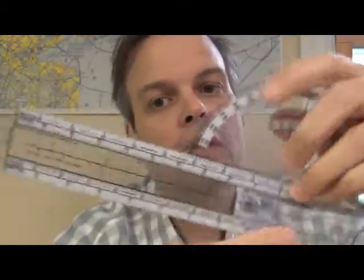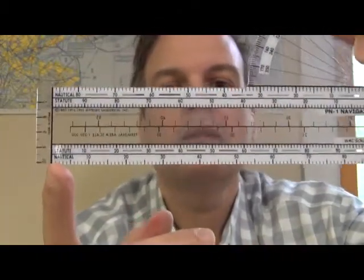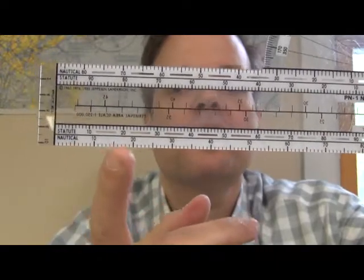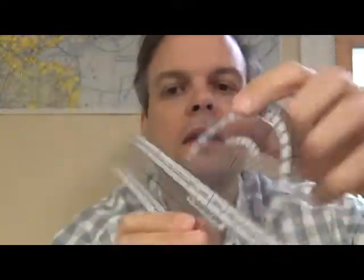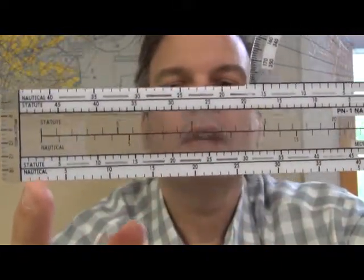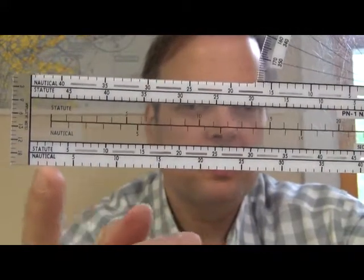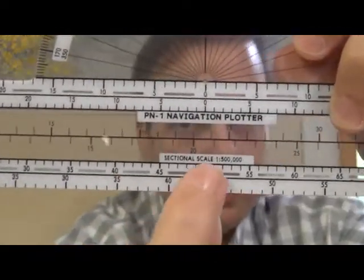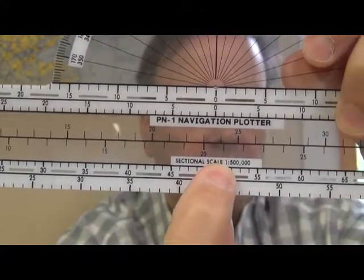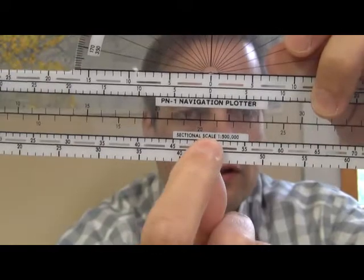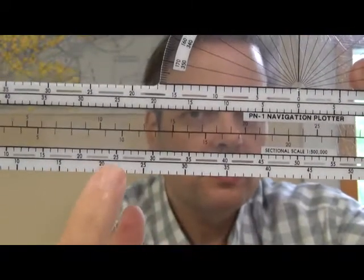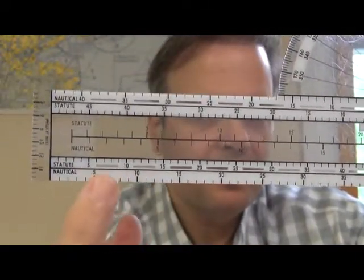Now, unfortunately, there are two nautical mile scales on this ruler. On the back side, you have this rather busy-looking scale with a lot of tick marks. And on the front side of the ruler, you have this same nautical mile scale, but it doesn't look as busy — there are fewer tick marks. The side we're going to use is used for sectional charts. All the charts in the test use sectional charts, so you're going to always use this less busy scale.